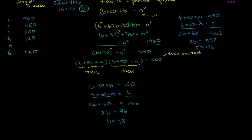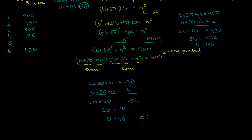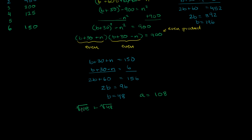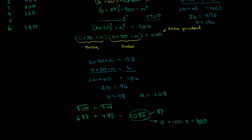So our next candidate is b = 48, and then a = 108. Taking √108 + √48: 108 is 36 times 3, so √108 = 6√3. And 48 is 16 times 3, so √48 = 4√3. Adding them together gives 10√3. So the square root of c equals 10√3, which is definitely not an integer. And squaring it, c = 100 times 3 = 300, which is an integer. So this works.